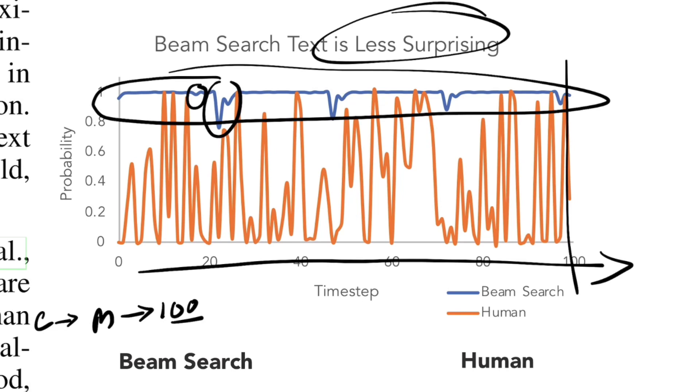Whereas if you see humans, you can see words that are close to zero probability are also what humans select while writing text. They also select high probability words as and when required. This clearly shows there is a lot of variance in how humans write text compared to beam search that seems monotonous and repetitive for longer sequences.